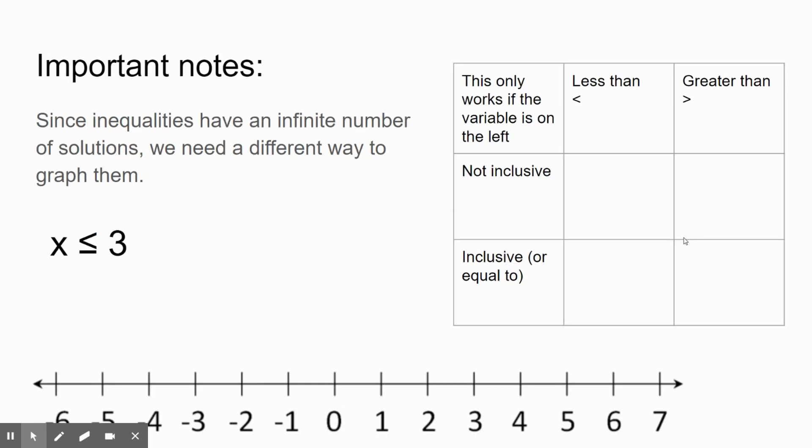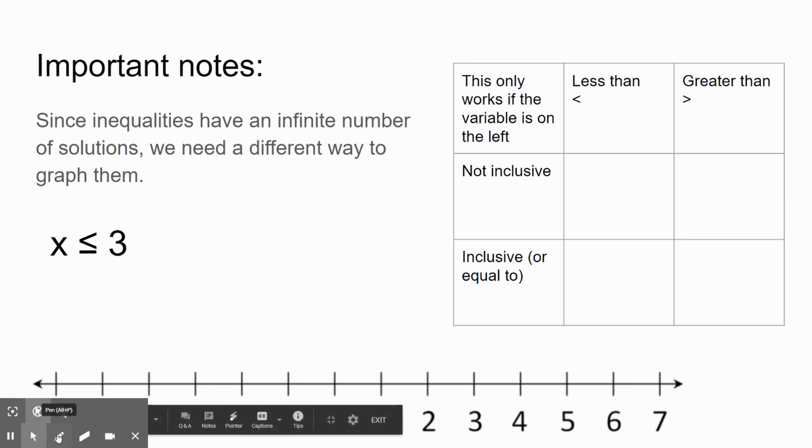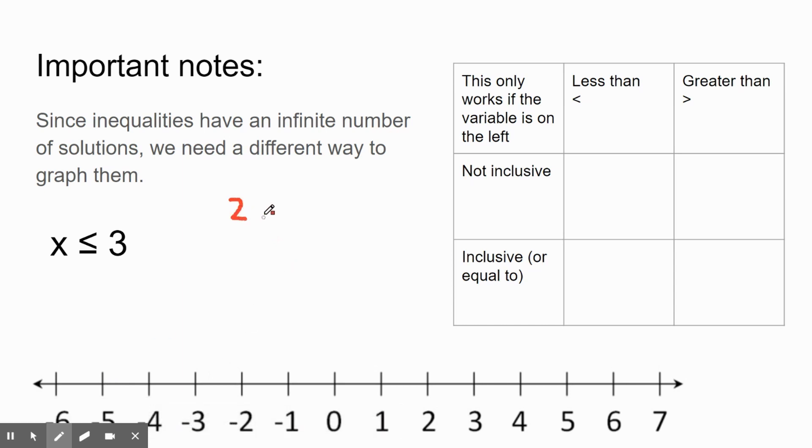One important thing to remember is that inequalities have an infinite number of solutions. You'll remember from the last video that something like x is less than or equal to three has an infinite number of solutions. You could have two as a solution because two is less than or equal to three; three is less than or equal to three. We could have one, negative one, zero. There are so many different numbers we could go for, so we can't really just put a point on a number line and call it good. We have to do something a little bit more.